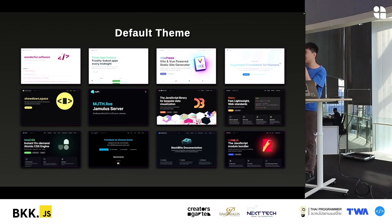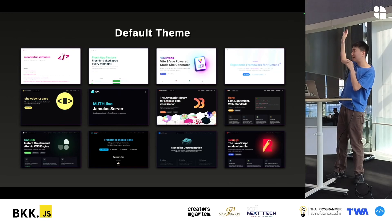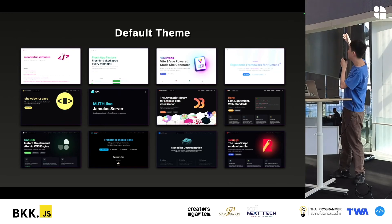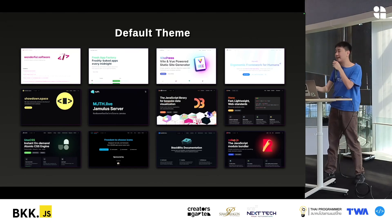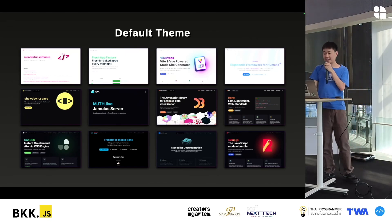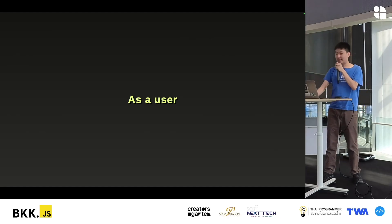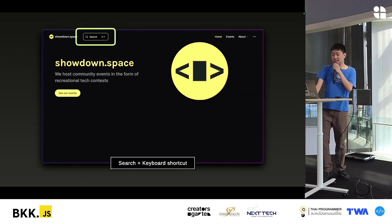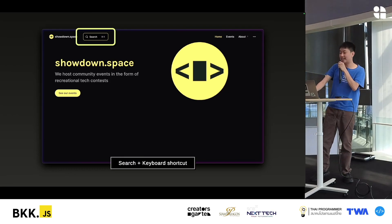The thing that I really like about VitePress is the default theme. You can see that from the web, the appearance can be customized for each site. But all of the websites can be customized to create their own pages. On the right side of the web, there will be a search bar that we can press Command K to activate.